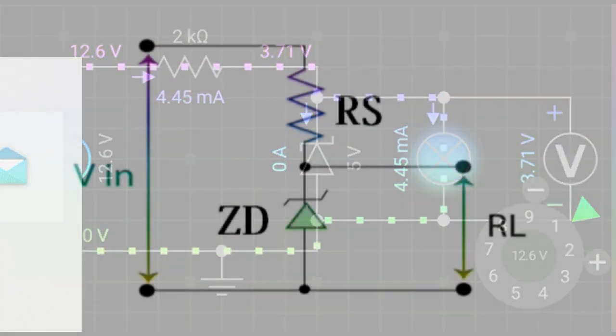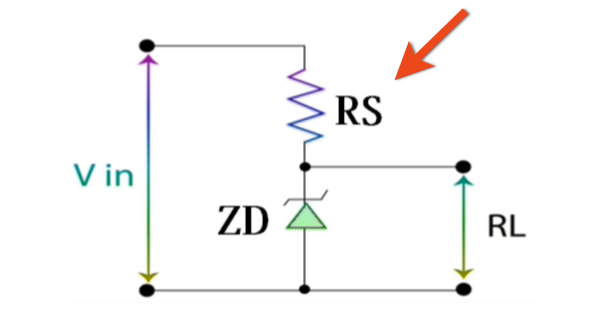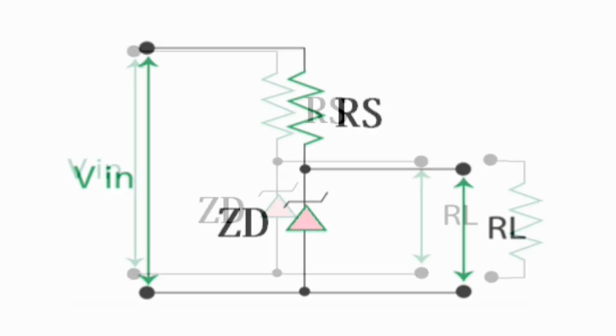Resistor RS is connected in series with the Zener diode to limit the current passing through the diode. The voltage source VS is applied to both ends of this connection. The cathode terminal of the Zener diode is connected to the positive rail of the DC source, so the Zener diode is reverse biased and operates in the breakdown region. Resistor RS is chosen to limit the maximum current in the circuit.